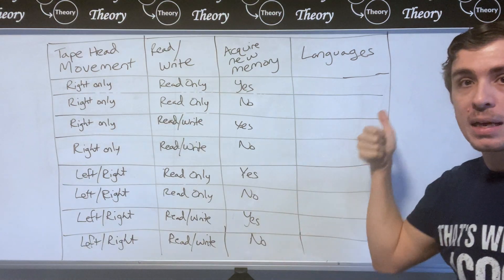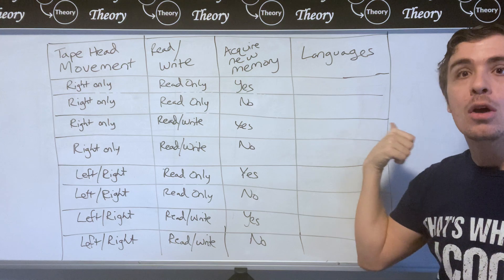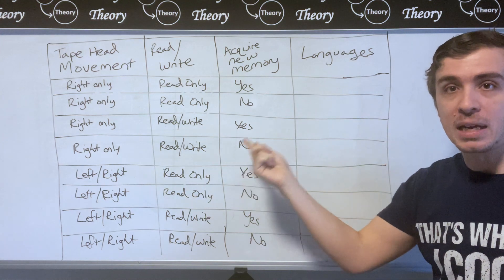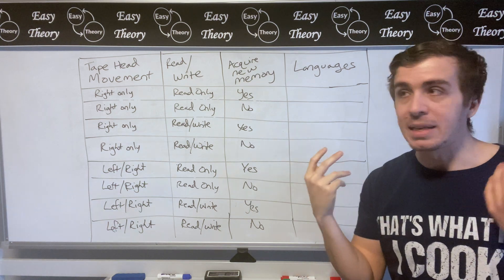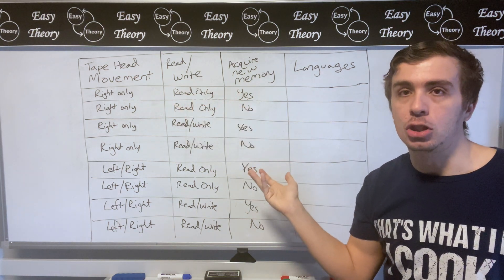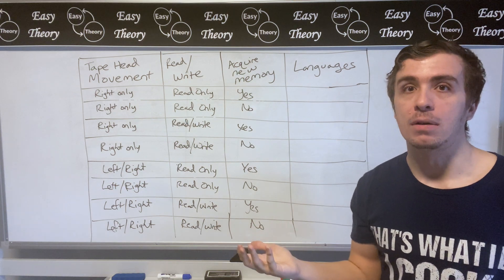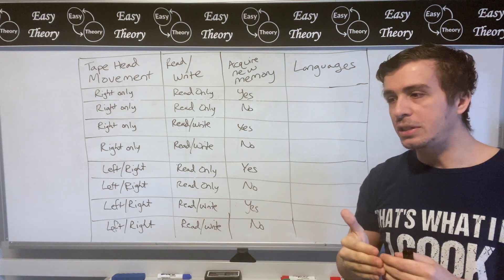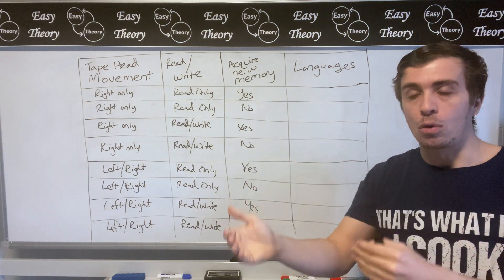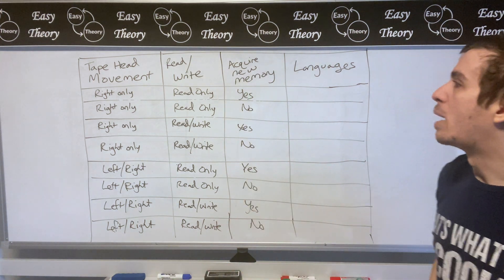So what we want to do is in this column to actually put what types of languages those kinds of machines can recognize and try to understand what the power of each is. Do we need all three of these to work in conjunction to get equivalent power of Turing machines, or is there some kind of hierarchy along the way, or is it that most of them are regular and then only like one of them is Turing machine? We need to understand why. So let's take a look at these.